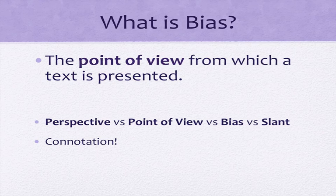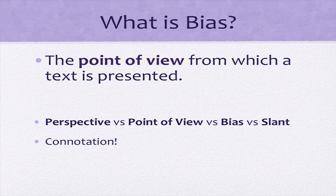So what is bias? Bias is the point of view from which a text is presented, and we will probably be using words like perspective, point of view, bias, or slant synonymously — interchangeably — meaning they all kind of mean the same thing. And so when we say it's the point of view of an article, or we say it's the bias of the article, we're just trying to ask you to look at who's writing it, where's it coming from? What do they support? What do they question? What are they critical of?